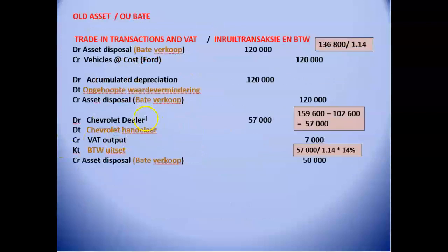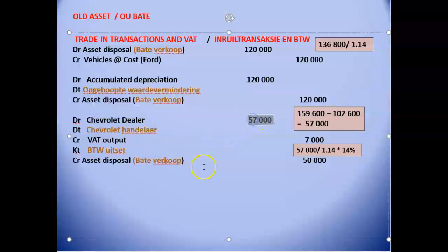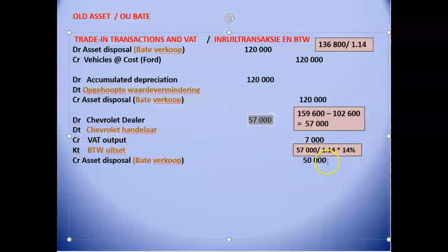We debit the Chevrolet dealer's account — which at this point is a debtor — with $57,000, which is what he gave us for the old vehicle. Included in that amount is VAT, which we pay over to the receiver of revenue. So the VAT portion of $7,000 is credited against the VAT output account, and the net amount of $50,000 goes to the asset disposal account.